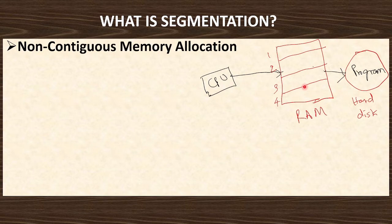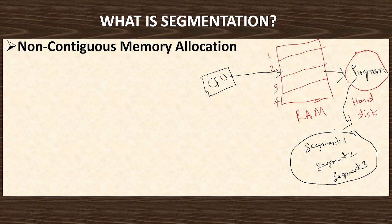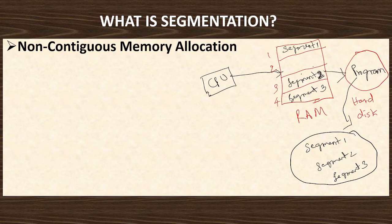In order to get over the fragmentation problem, segmentation is used. The program will be segmented into modules or different segments, and each segment will be loaded into the RAM non-contiguously. Suppose this program is divided into segment 1, segment 2, and segment 3. Segment 1 will be placed in block number 1, segment 2 can be placed in block number 3, and segment 3 can be placed in block number 4. They are not in contiguous fashion — some other program's segments might be in between. So non-contiguous means not adjacent to each other. You can load one program non-contiguously in the RAM. That is why segmentation is called non-contiguous memory allocation.